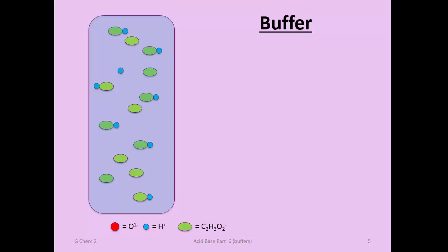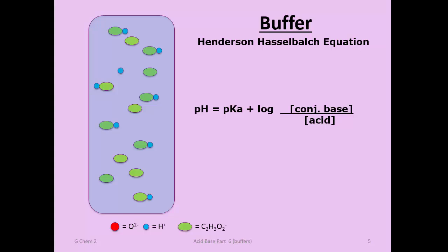To get into the specifics of the buffer, we use the Henderson-Hasselbalch equation. It says: if you know the pKa of the conjugate acid, you add the log of the quantity conjugate base divided by the weak acid present. That ratio—take the log of it, add it to the pKa—gives you the resulting pH. This helps you understand how to make buffers and determine their capacity.